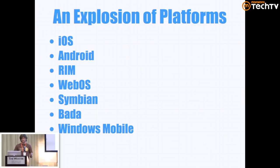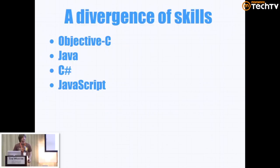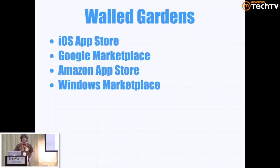iOS, Android, RIM, WebOS, Symbian, Bada, and Windows Mobile, just to name a few. Along with that has come a divergence of skills. If you want to target the broadest possible audience with your game, you'll need to simultaneously be familiar with a number of different languages like Objective-C, Java, C Sharp, and JavaScript. There's also been segmentation of the market — it's very difficult to reach everyone with a single game because of walled gardens: the iOS App Store, the Google Marketplace, more and more different Android marketplaces, Windows Marketplaces, just to start.